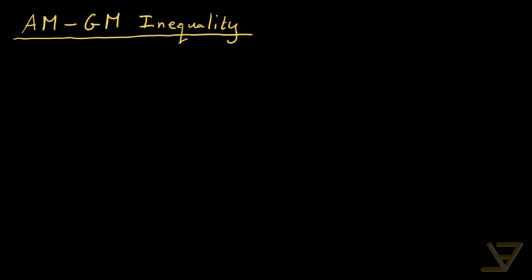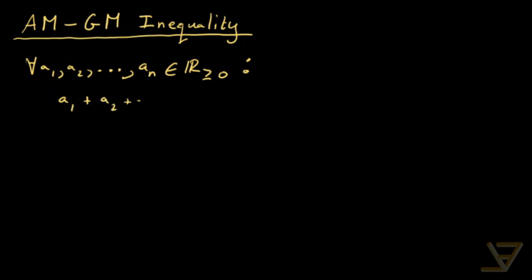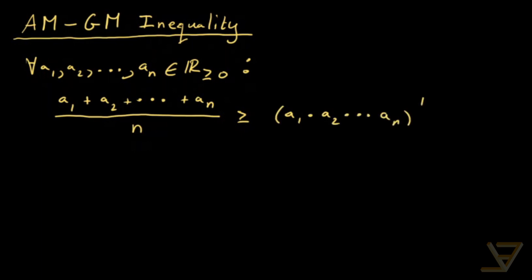Here's what the arithmetic mean geometric mean inequality says. It says that for all a1, a2, all the way through to a_N, for any positive integer N, where these a_k are in the non-negative reals, it holds that a1 plus a2 all the way through to a_N divided by N is greater than or equal to the N-th root of a1 times a2 all the way through to a_N.